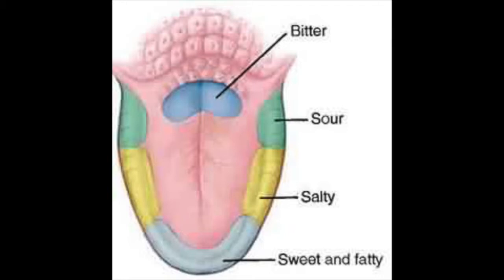Normally our taste sensations are complicated mixtures of qualities. However, all taste sensations can be grouped into one of four basic modalities: sweet, which is elicited by many organic substances including sugars, saccharin, and alcohol; sour, which is produced by acids; salty, which is produced by metal ions or inorganic salts; and bitter, which is elicited by alkaloids such as nicotine or caffeine. Many substances produce a mixture of these basic taste sensations, and taste buds generally respond to them all. However, it appears that a single taste cell only contains receptors for one taste modality.